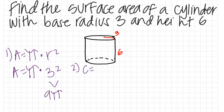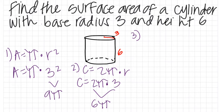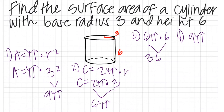The next step is to find the circumference using the formula C equals 2π multiplied by r. Plugging in our values gives C equals 2π multiplied by 3, which equals 6π. We then multiply 6π by the height of the cylinder, which is 6, to find the surface area of the sides. This gives us 36π for the lateral surface area.